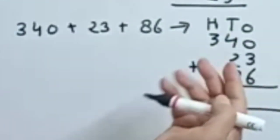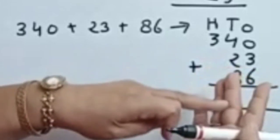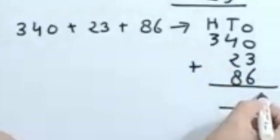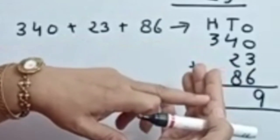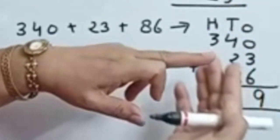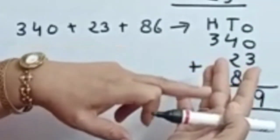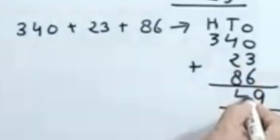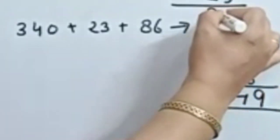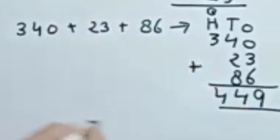Count after 3: 6 numbers — 4, 5, 6, 7, 8, 9. After 4, 2 numbers: 5, 6, then 8 numbers: 7, 8, 9, 10, 11, 12, 13, 14. Means 4 here, 1 carry here. 3 plus 1 is 4. This is 449.